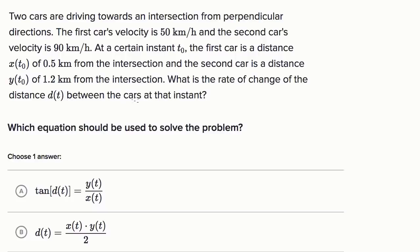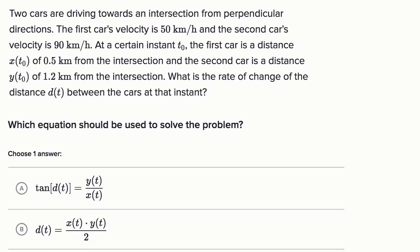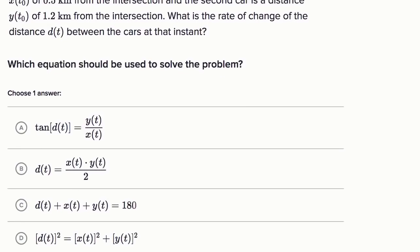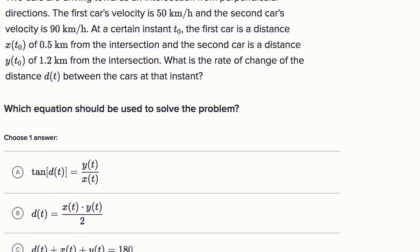d(t) between the cars at that instant, at t₀? Which equation should be used to solve the problem? They give us a choice of four equations. You could pause the video and try to work through it on your own, but I'm about to do it as well.